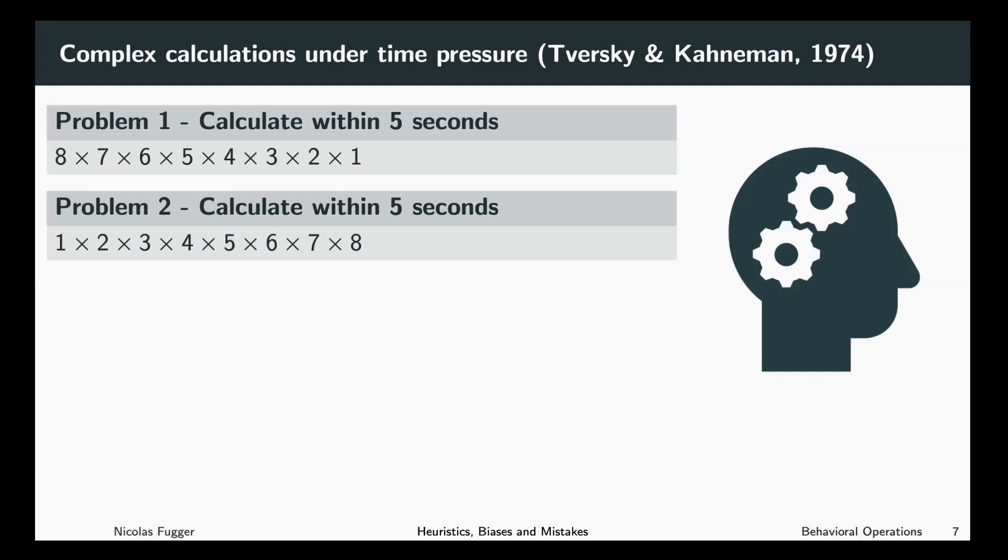As you can see, both problems are obviously too hard to be calculated within five seconds. Problem one, or members of group one, were asked to calculate the product of 8×7×6×5×4×3×2×1. Problem two was stated a bit differently.